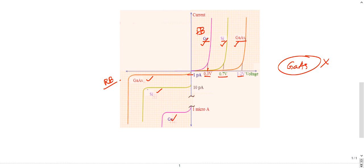Silicon is moderate - it gives 10 picoampere reverse current. Then germanium has one microampere, so this is a better one.